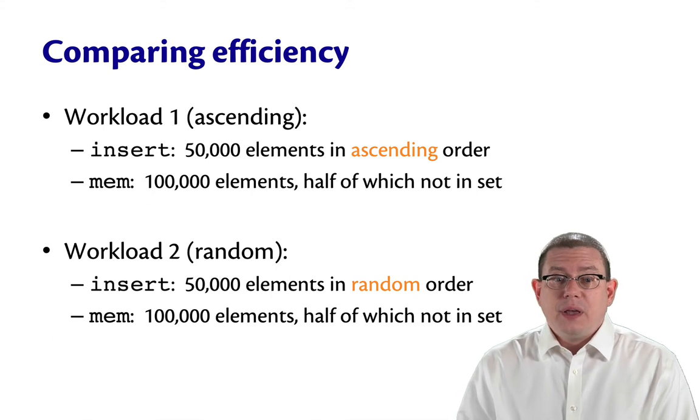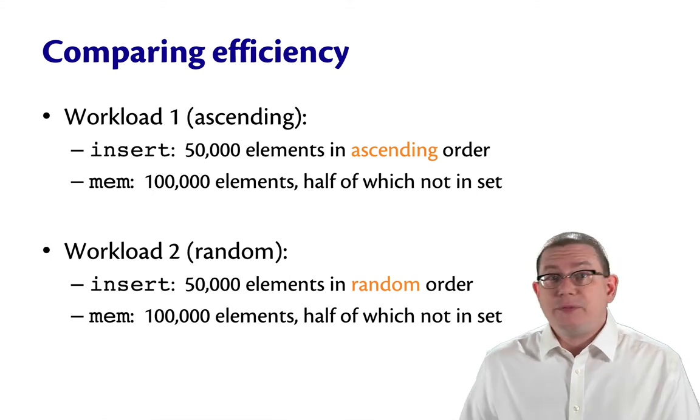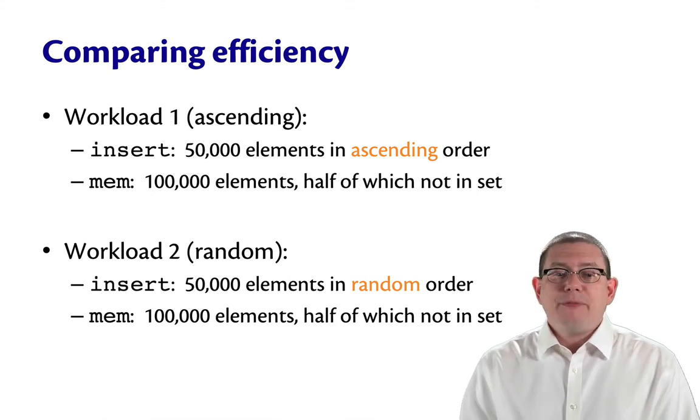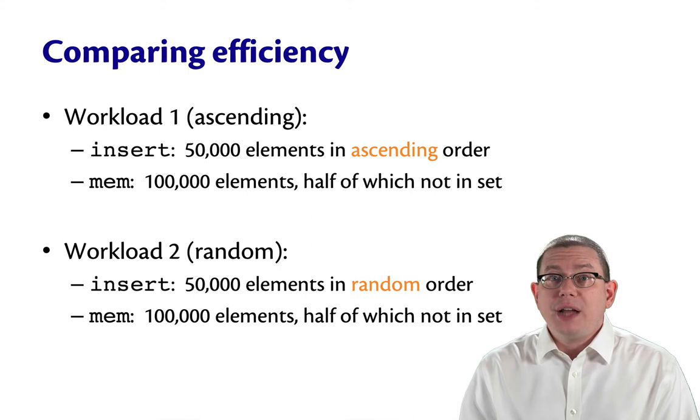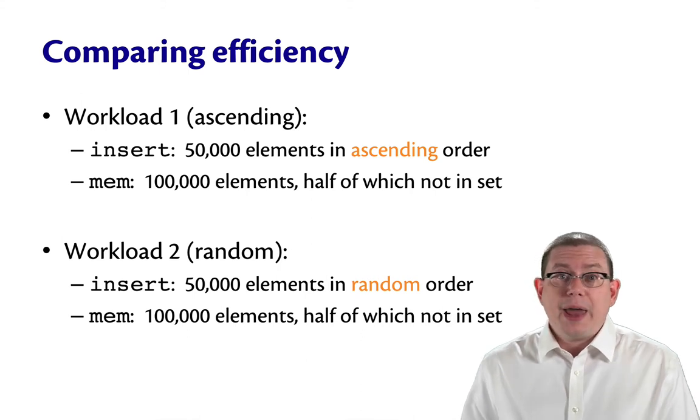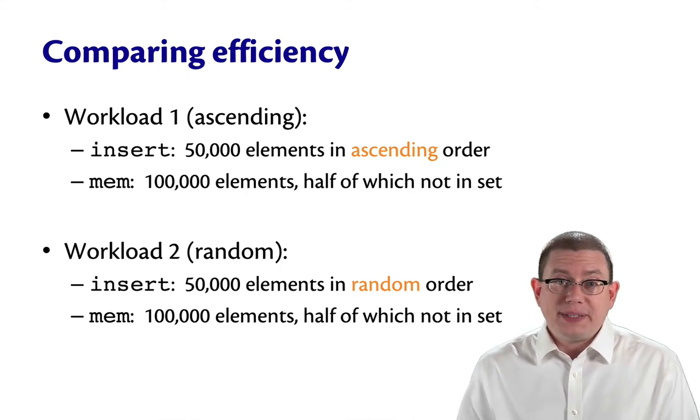And then after all that's done, I'm going to call mem 100,000 times. Half of those times, it's going to be on elements that are in the set, so I have to look through the tree to find them. Half of the time, it's going to be on elements that are not in the set. And so depending on how the tree shape ends up, I might get a faster or a slower mem.